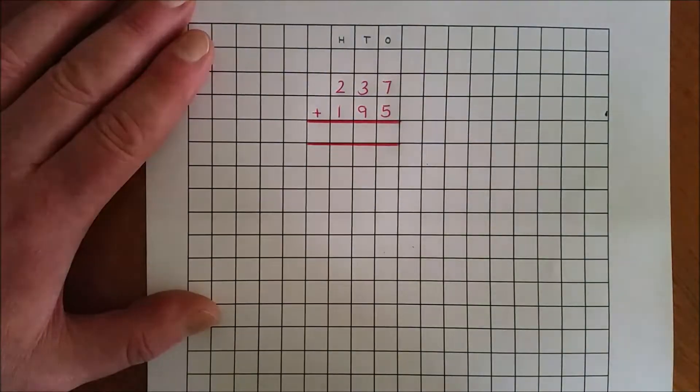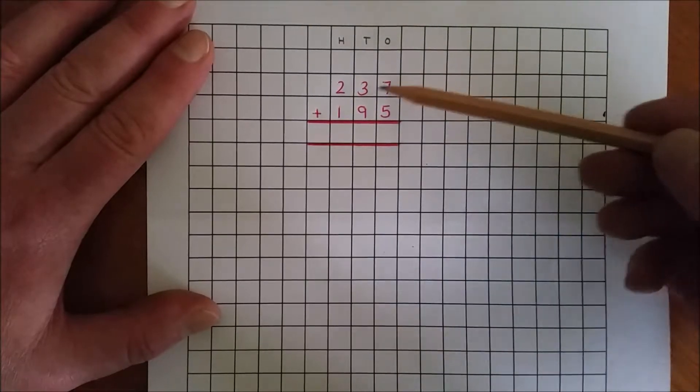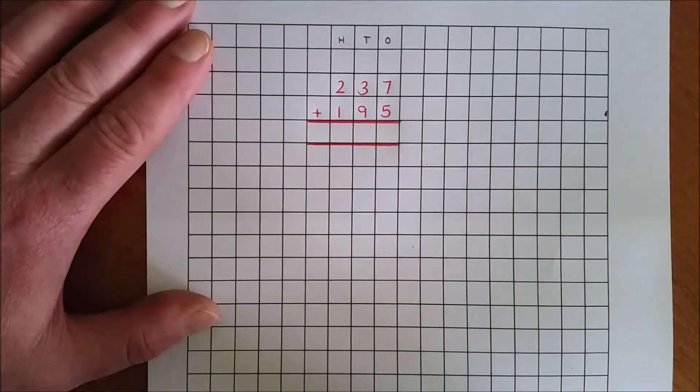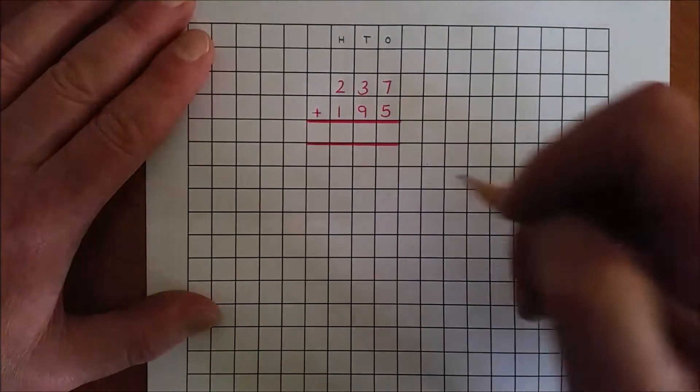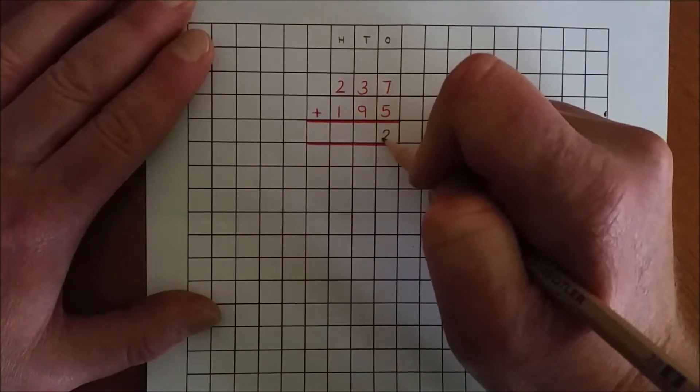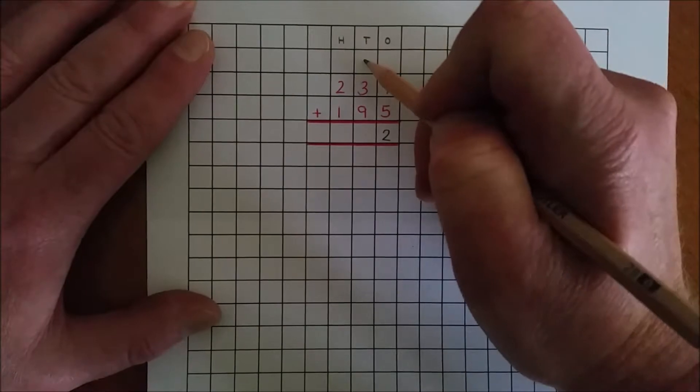Add the ones. 7 ones and 5 ones are 12 ones. Rename 12 ones as 2 ones and 1 ten.